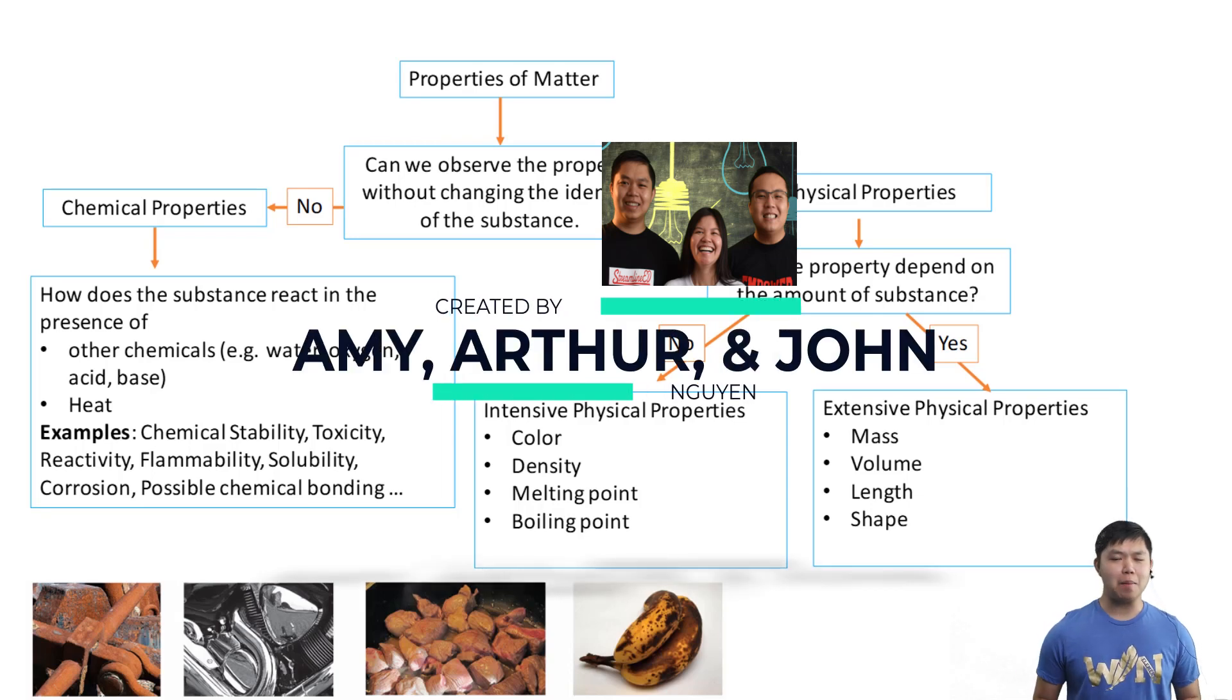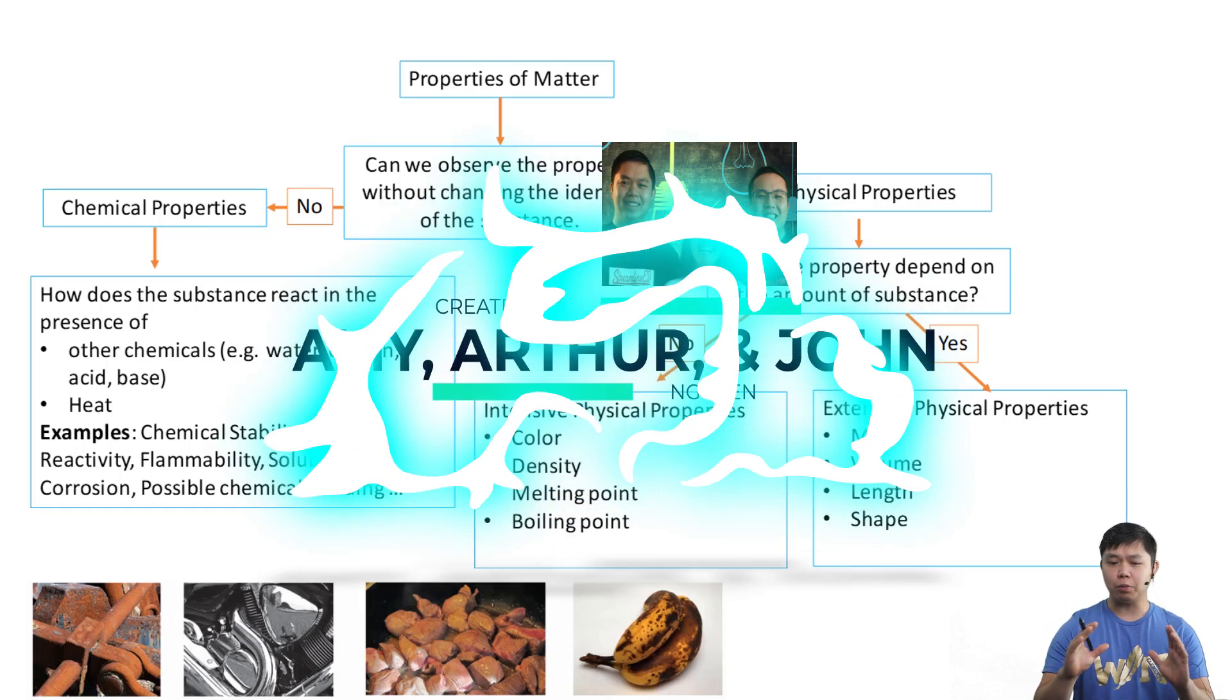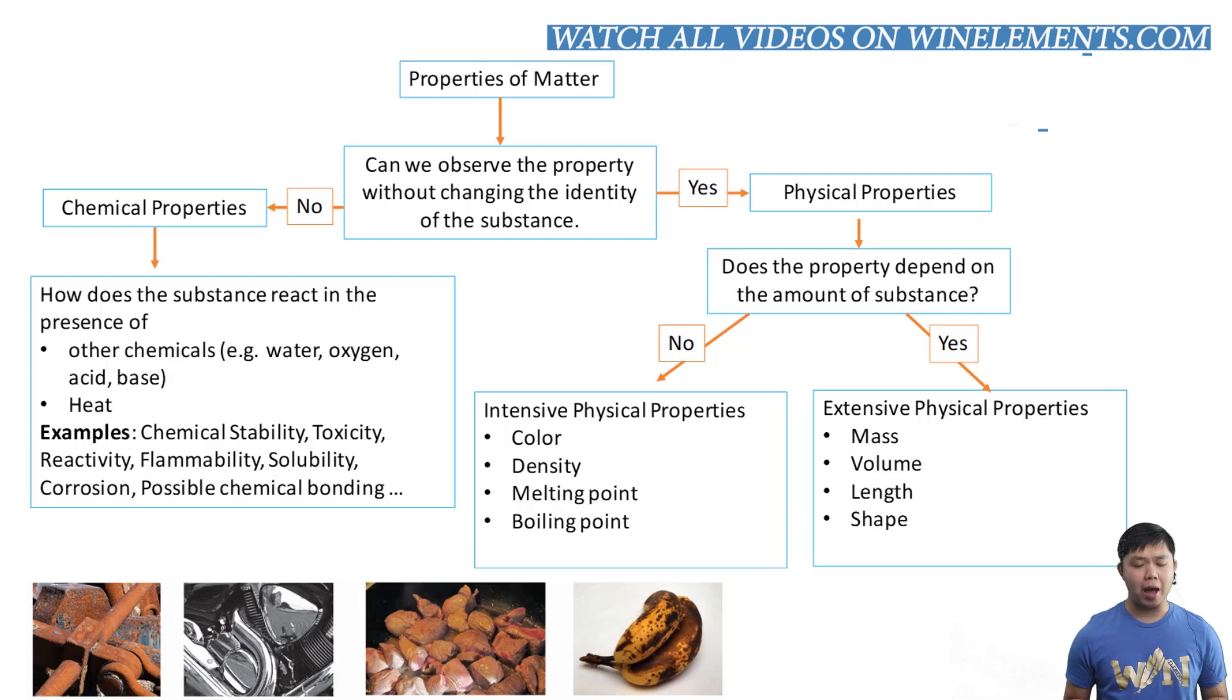Welcome back to another exciting chemistry lesson. In this lesson, we are going to look at properties of matter. There are two types of properties of matter. The first one is chemical properties, and the other one is physical properties.